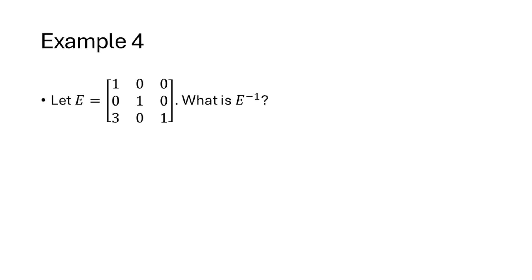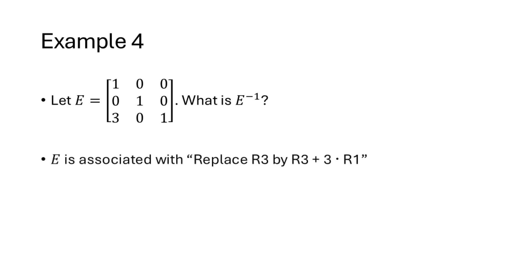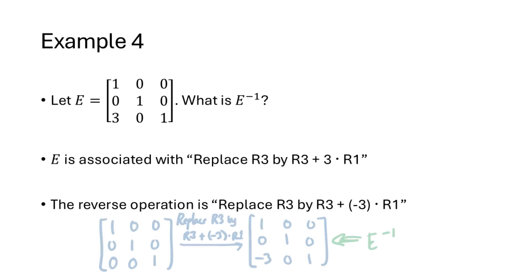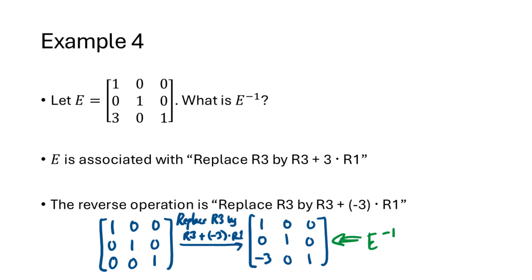Another example: the elementary matrix E corresponding to replacing row 3 by row 3 plus 3 times row 1. The reverse operation is to replace row 3 by row 3 plus negative 3 times row 1 — what we'd do to get back to the identity matrix. Applying that reverse row operation to I gives us E inverse, and we can verify by multiplying E by E inverse in either order to confirm we get I.